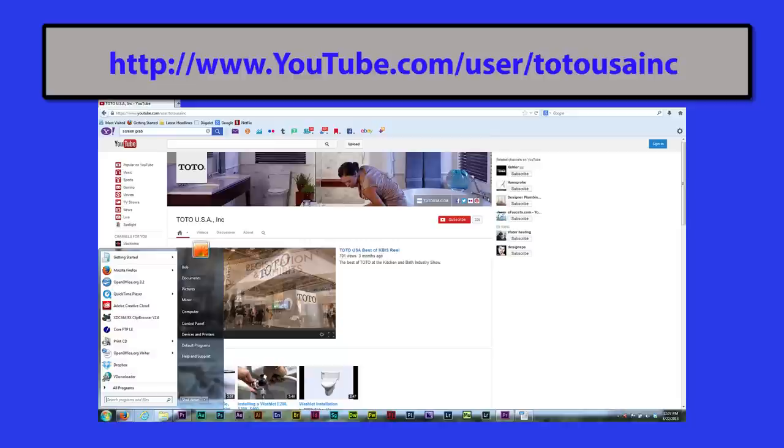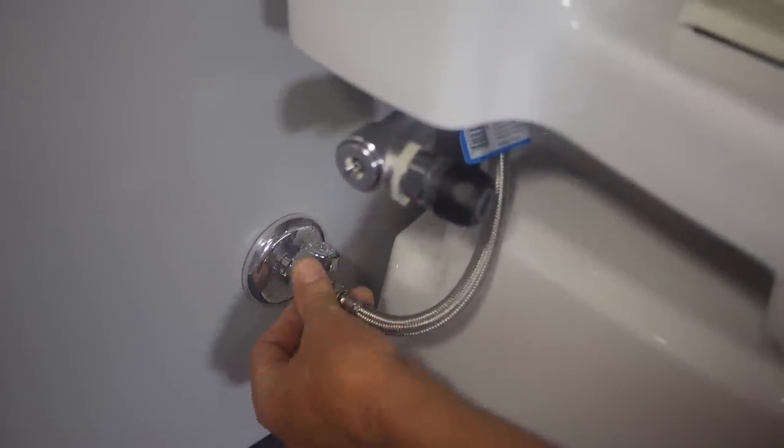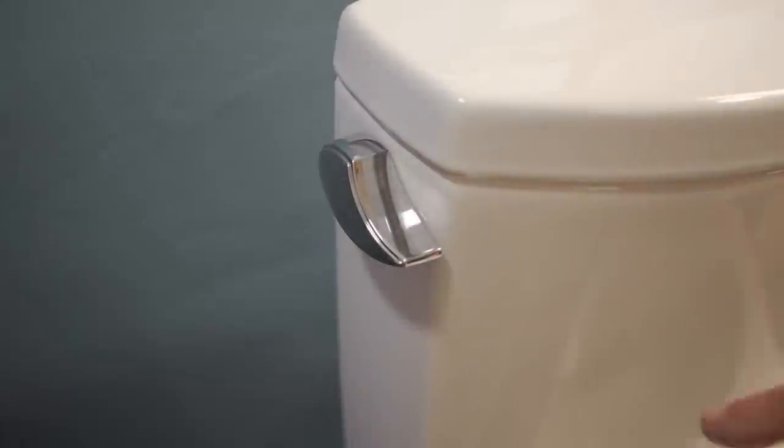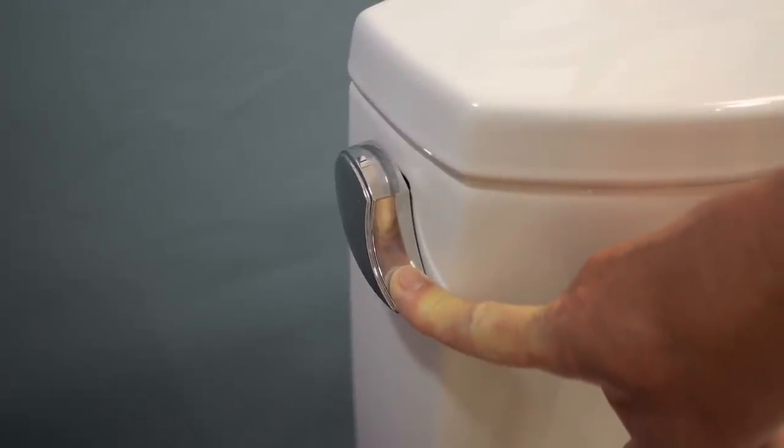The replacement procedure is straightforward. First, turn off the water supply. Second, flush the toilet and hold the lever open for 10 to 15 seconds to completely drain the tank.